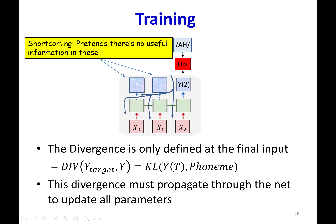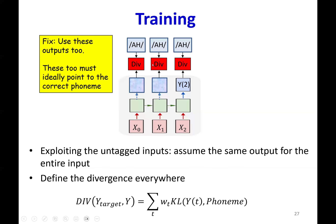Consider the speech recognition problem. If I'm saying 'ah,' you're certain that the sound is 'ah' at the final input, but at the other times, is the phoneme any different? If I'm just saying 'ah,' what would the labels at these times be? They would be the same. So we're ignoring them. What we could actually do is assume that the same label also applies at these other outputs.